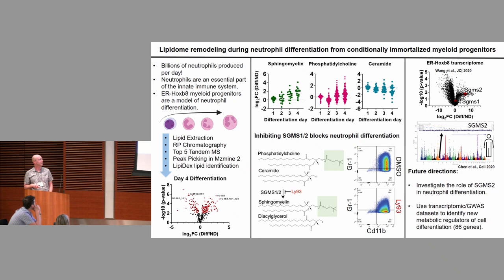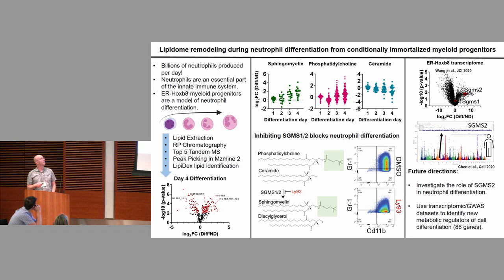These progenitor cells are immortalized with a HoxB8 oncogene expressed off of estradiol receptors — when I remove estrogen from the media, these cells differentiate into neutrophils. I use a basic workflow of lipid extraction with butanol-methanol and a Folch extraction, reverse phase chromatography followed by top-five tandem mass spectrometry, and lipid identification using LipidEx developed in the Kuhn lab with peak picking done in MZmine 2. On day four of differentiation, these almost-neutrophils have a very distinct lipid profile compared to non-differentiated cells.